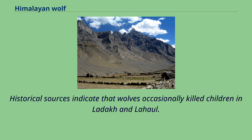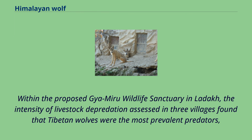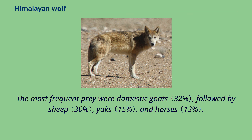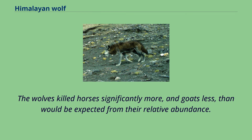Historical sources indicate that wolves occasionally killed children in Ladakh and Lahaul. Within the proposed Gyamiru wildlife sanctuary in Ladakh, the intensity of livestock depredation assessed in three villages found that Tibetan wolves were the most prevalent predators, accounting for 60% of the total livestock losses, followed by the snow leopard and Eurasian lynx. The most frequent prey were domestic goats, followed by sheep, yaks, and horses. The wolves killed horses significantly more, and goats less, than would be expected from their relative abundance.